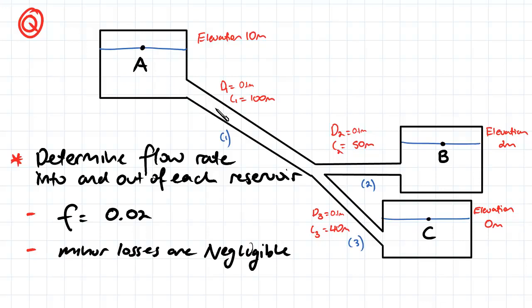Is the flow going out of A and into B and C, or is the flow going out of A and out of B and into C? So there are two different ways that the flow could be going.